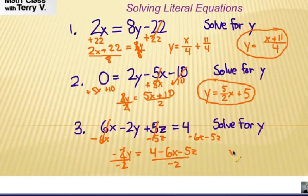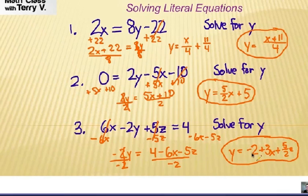And so, if I simplify my answer, I'm going to get, what's 4 divided by negative 2? That would be negative 2. What is negative 6x divided by negative 2? That would be positive 3x. Be careful of your signs there. A negative divided by a negative. And here, negative 5z divided by negative 2 would be positive 5 halves z. Or I could say 5z over 2. Now, it's a little messy, but again, we're just manipulating it and getting it in terms of y.